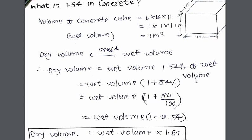You might have observed that whenever we calculate the quantity of concrete, we multiply the value with 1.54. But why? What is the reason? The reason is very simple guys.